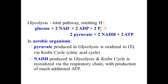All this process is done in aerobic conditions. In aerobic conditions, glycolysis pyruvate is further oxidized to carbon dioxide by the Krebs cycle — the citric acid cycle.